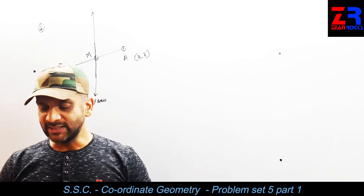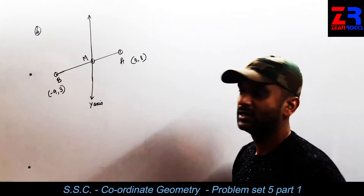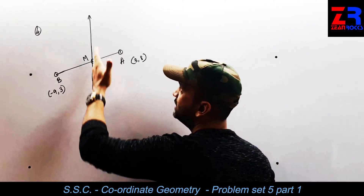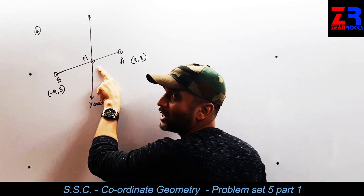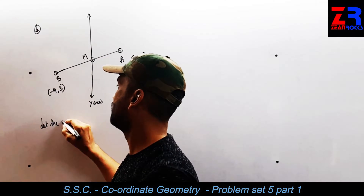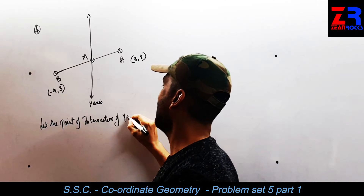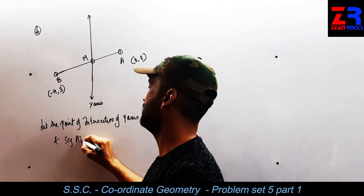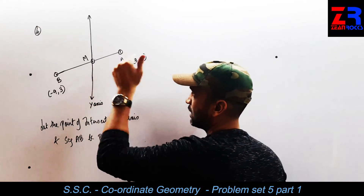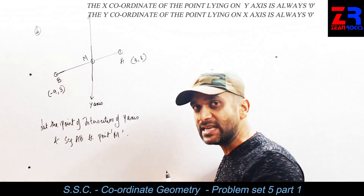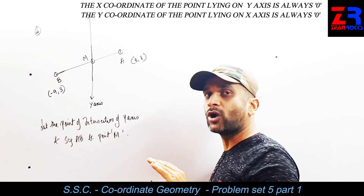This is question number 4: find the ratio in which line segment joining points A, B is divided by the Y-axis. Look at the diagram — this Y-axis is dividing segment AB at point M. So I write: let the point of intersection of the Y-axis and seg AB be point M.